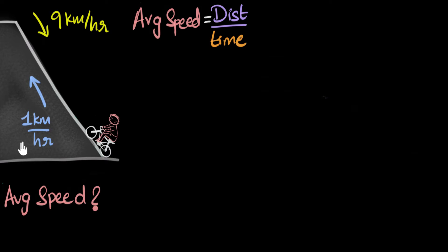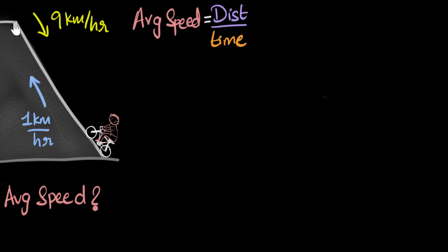While going up, we know he's traveling one kilometer per hour. This does not mean the distance is one kilometer and it takes him one hour. It could mean this is 10 kilometers long and it took him 10 hours — that also means one kilometer per hour. It could also mean 100 kilometers and 100 hours. Distance is not given and times are not given.